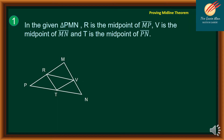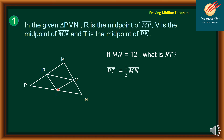Let's move on to the application of the midline theorem. In triangle PMN, R is the midpoint of MP, B is the midpoint of MN, and T is the midpoint of PN. If MN is equal to 12, what is RT? RT equals one-half MN, so substitute: RT equals one-half of 12, which equals 6 units.